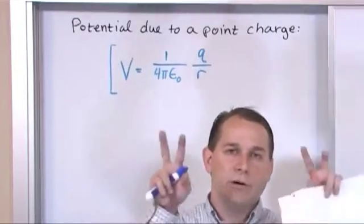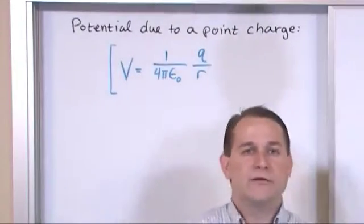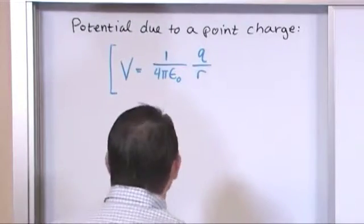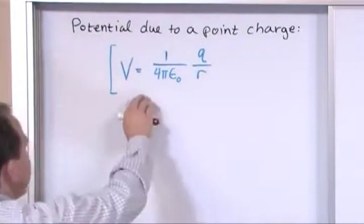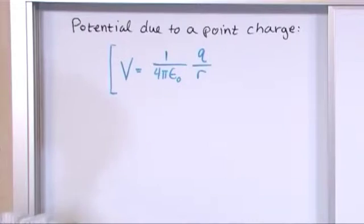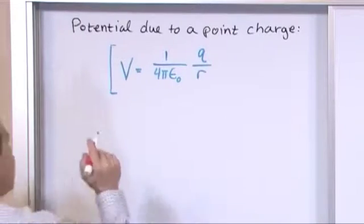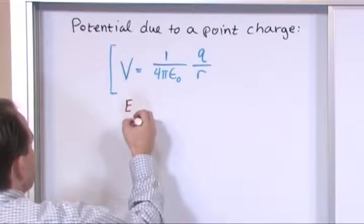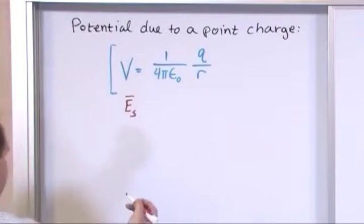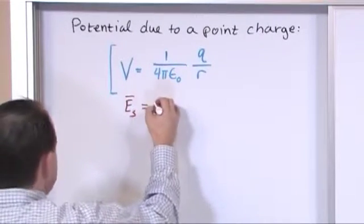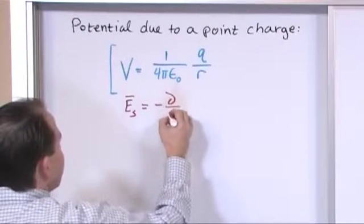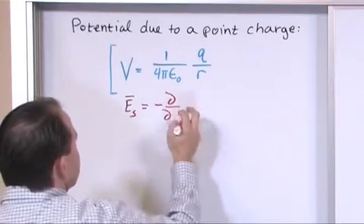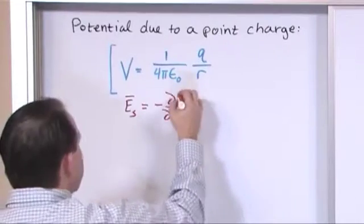Now let's do a little proof to show you that this is indeed correct. So if that is correct, if this is really the potential due to a point charge, then you should be able to satisfy the following. The electric field in whatever direction you look is equal to the negative of the partial derivative in that direction of the potential.